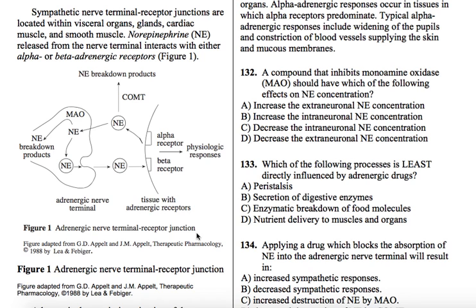Those calcium ions will bind to receptors, which will allow the receptors to fuse with the membrane of the synaptic cleft, and then they will exocytose their materials out into the synaptic cleft. Then the neurotransmitter will do its thing — it'll bind to a receptor, stuff like that.